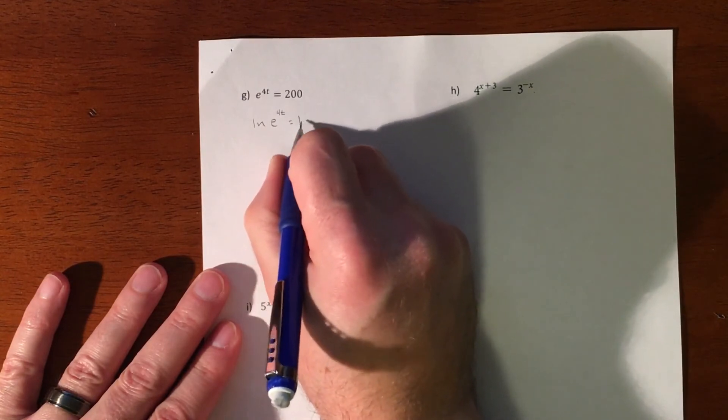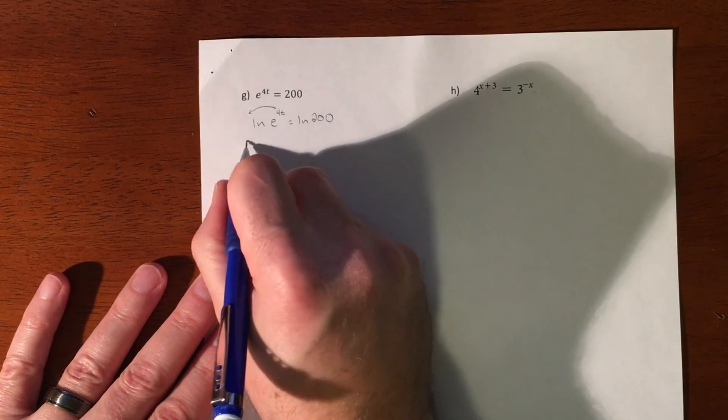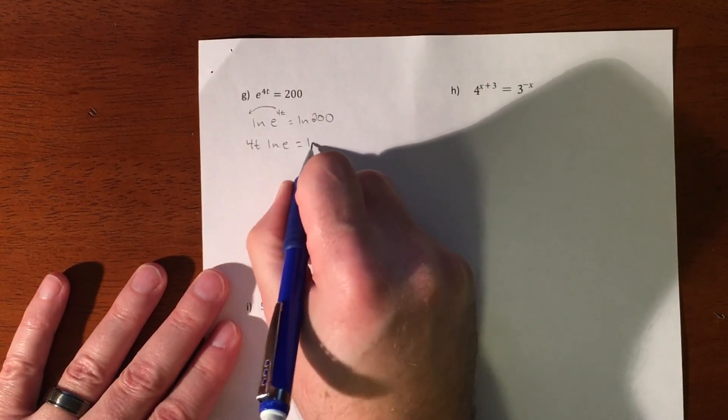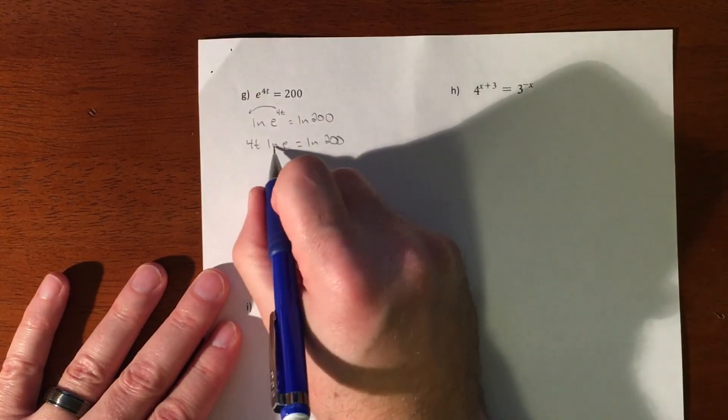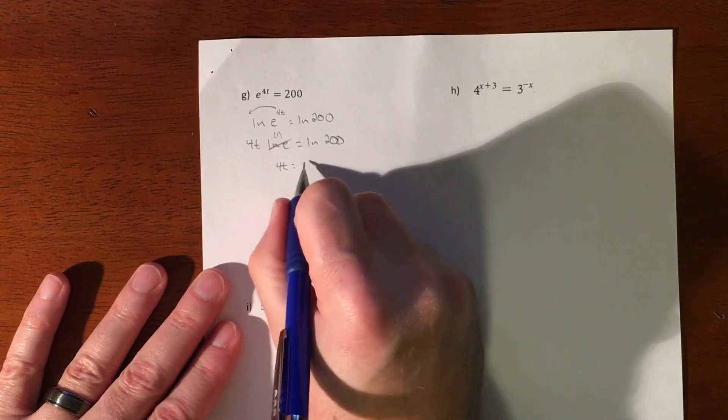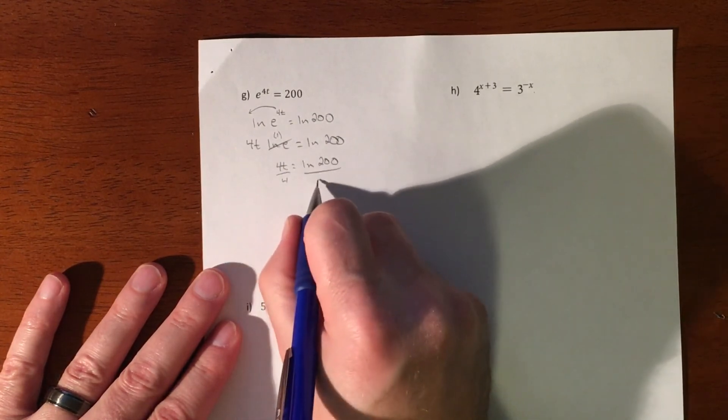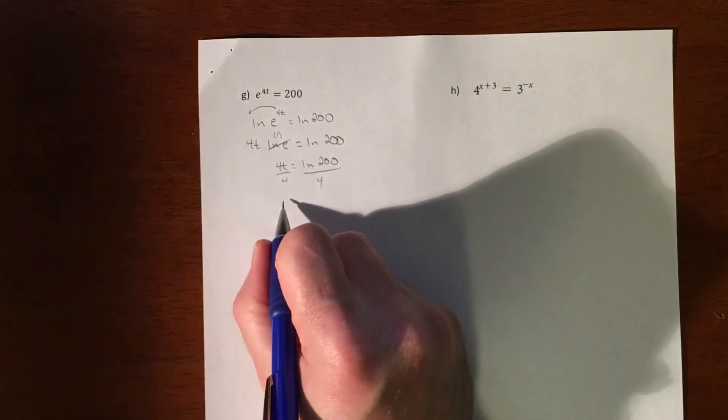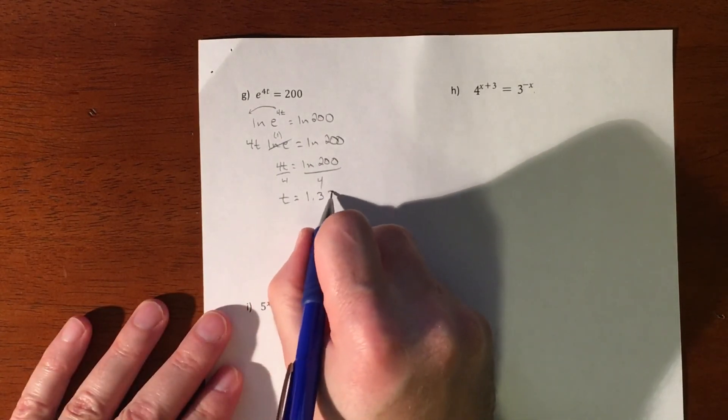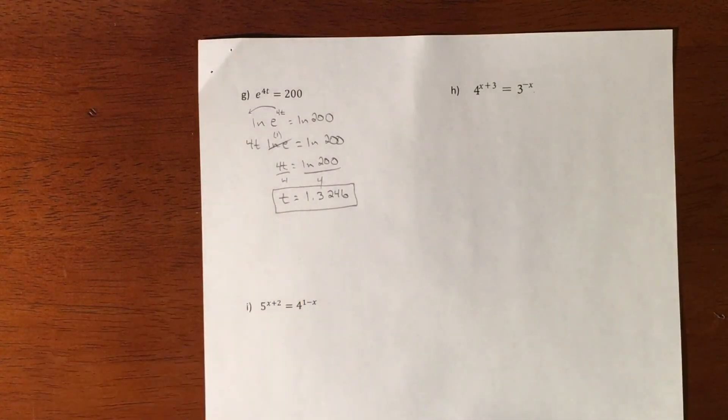That 4T is going to come in front, natural log both sides. That's going to get pulled down. And that is a one. So you're looking at 4T equals the natural log of 200 divided by four, and T is going to equal 1.3246.